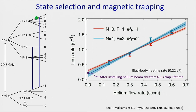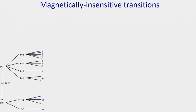Now we have molecules in the magnetic trap with selectable states, so we start to prepare superpositions of rotational states and look at how long the coherence survives. To simultaneously have magnetically trapped molecules and long rotational coherence times, we need states with large Zeeman shifts for trapping but also identical Zeeman shifts for a pair of states so there's no dephasing.